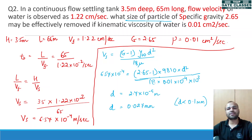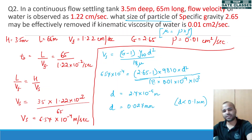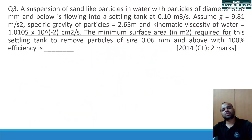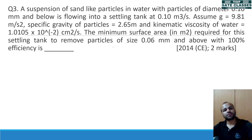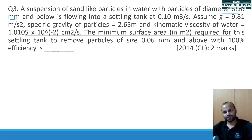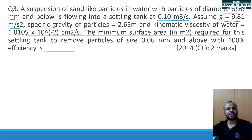To convert kinematic viscosity into dynamic viscosity, you need to multiply by the density of the fluid. Moving on to the next question, which came in GATE 2014 for two marks: a suspension of sand-like particles in water with particles of diameter 0.1 mm and below is flowing into a settling tank. Discharge is given, concerned size particles are given, specific gravity of particles is 2.65, and kinematic viscosity of water is given.